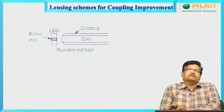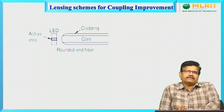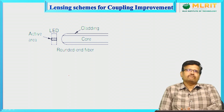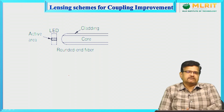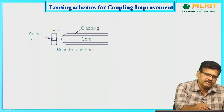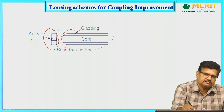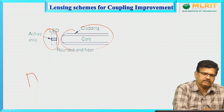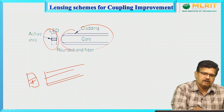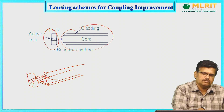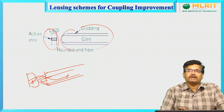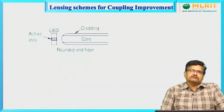We have different techniques for coupling improvement. The first one is the rounded end fiber system. Here the coupling takes place between the LED and the fiber. The amount of energy will enter into the core area, but it is not possible for all of it to enter directly.